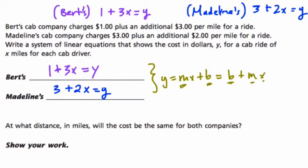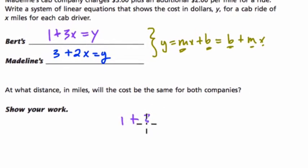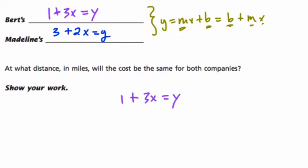At what distance would the cost be the same for both companies? So we're going to solve this system of equations. So 1 plus 3X equals Y, and then 3 plus 2X equals Y. I'm going to subtract the two equations from each other, because what this does is it eliminates the Y variables. And we can subtract equations, just like we can numbers.